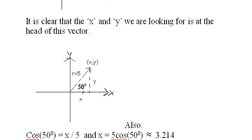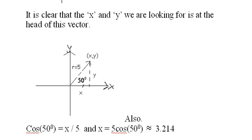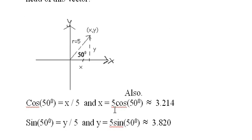Cosine of 50 degrees is x over 5, isn't it? And if we solve for x, we find that x equals 5 cos 50, or 3.214.